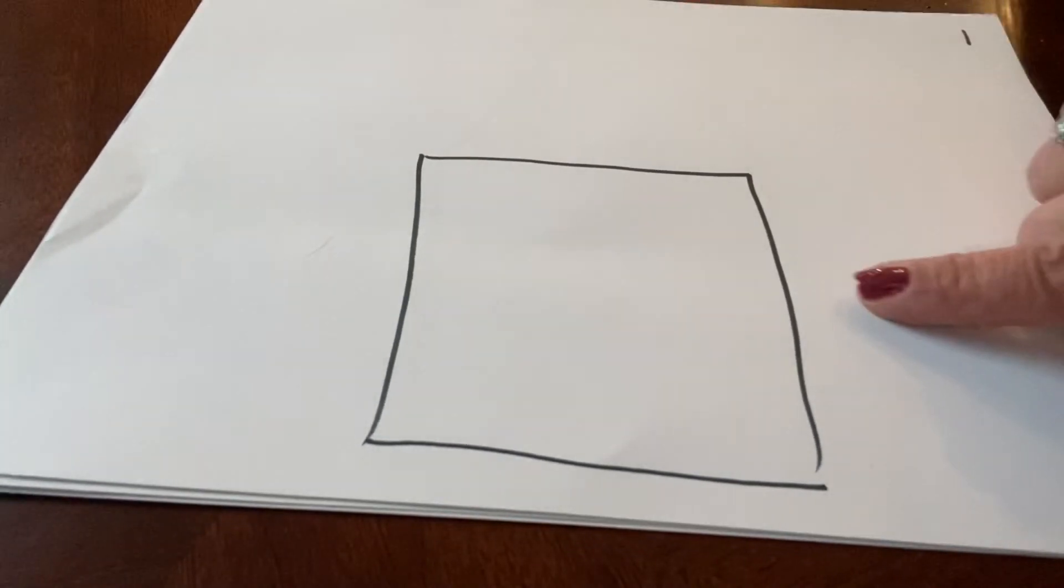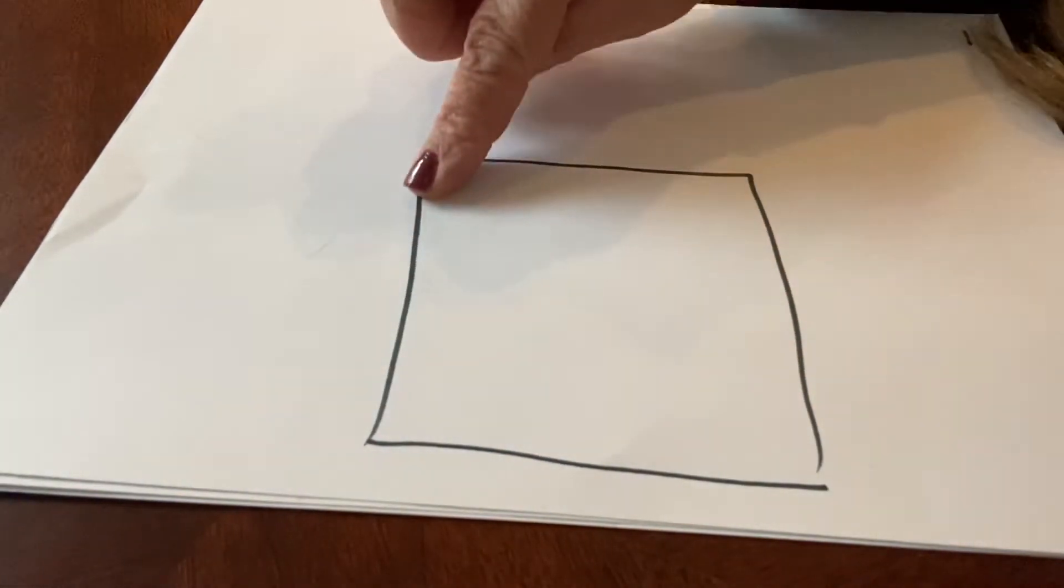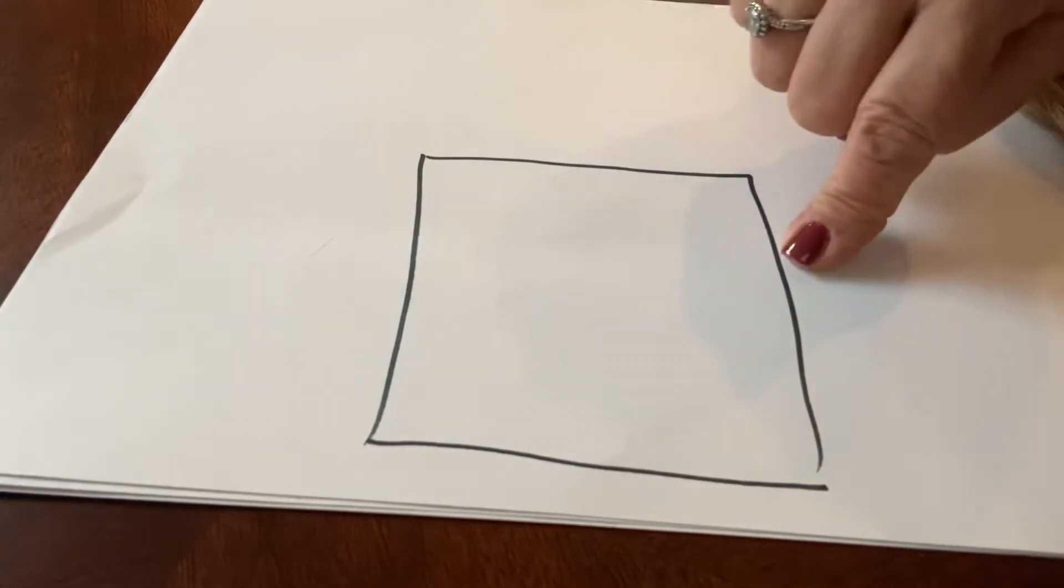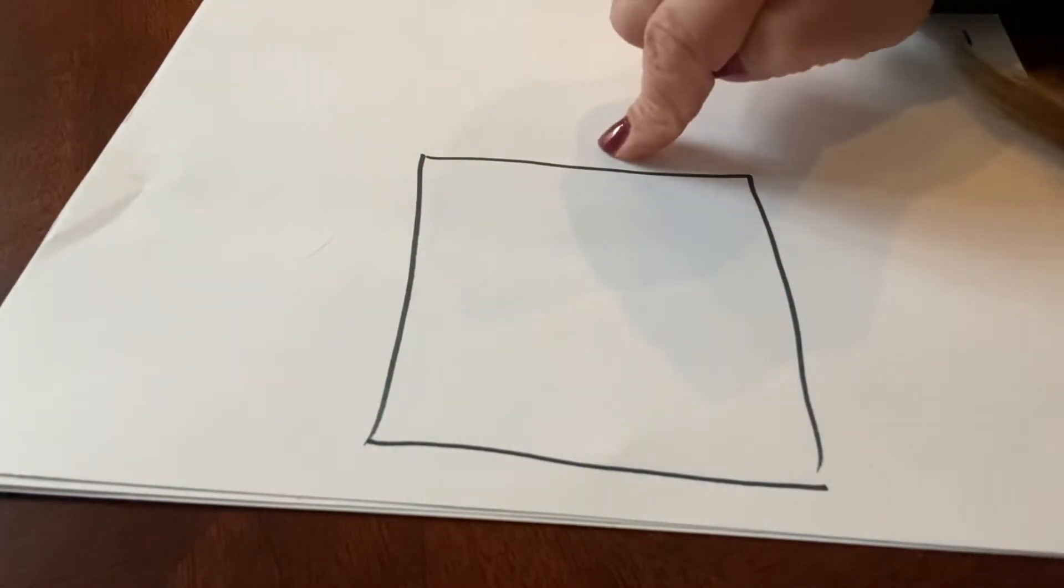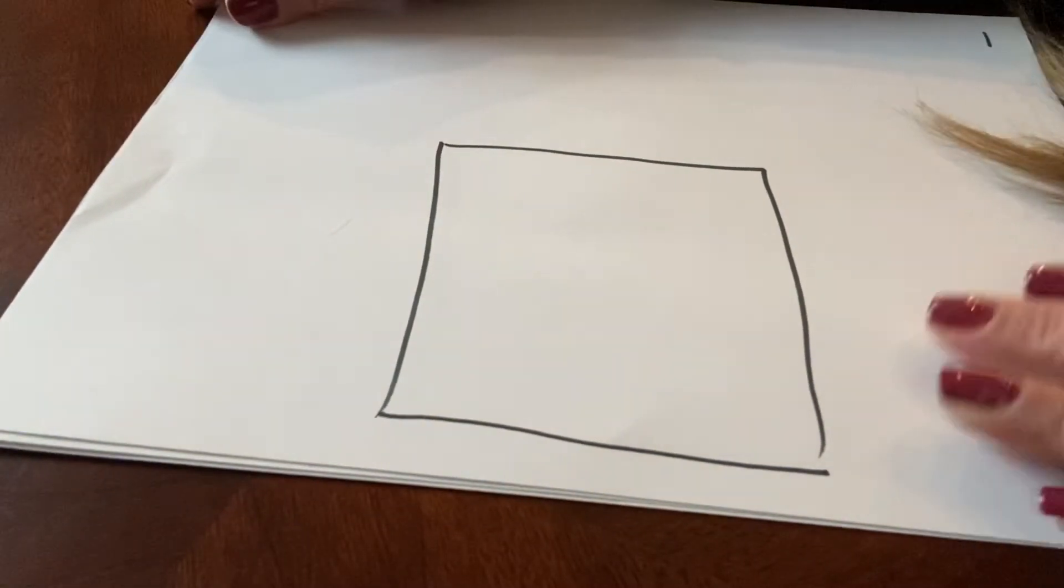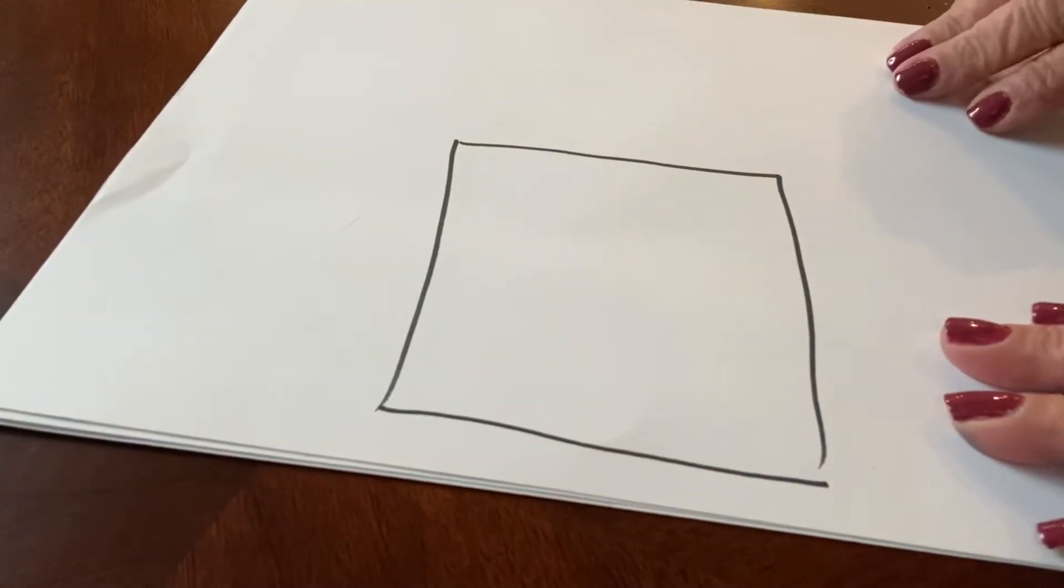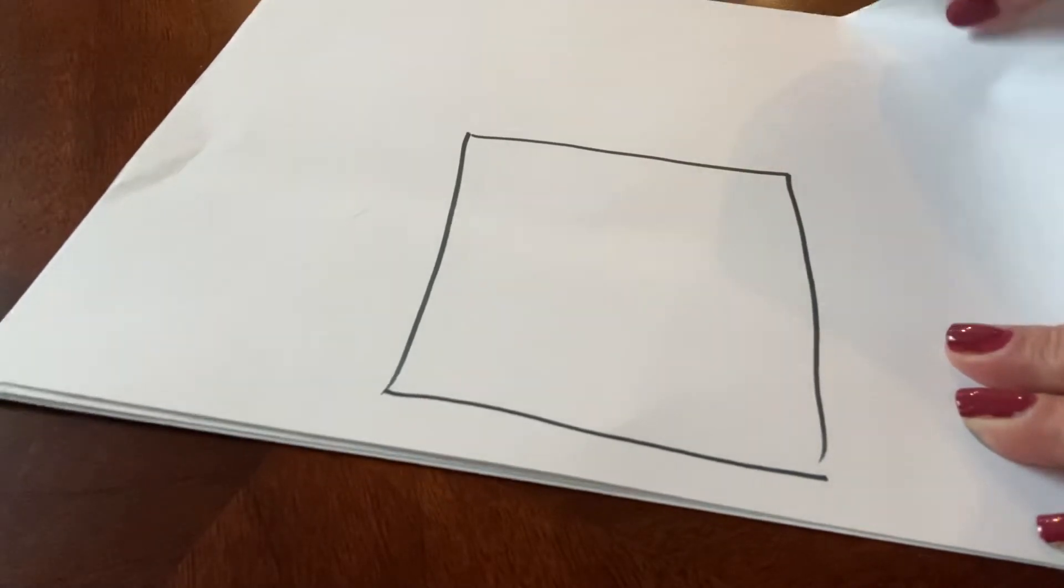Can you tell me what shape is this? Let's think about it. It has two of the same sides here and two of the same size lines here. You know what it is? It's a square.